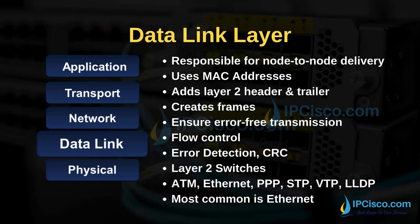The data link layer is the second layer of the TCP/IP model. It is similar to the OSI data link layer. The main responsibility of the data link layer is node-to-node delivery of data. It provides error-free transmission of data. Flow control, error detection, and CRC are used in this layer. Physical addresses — MACs — are also used in this layer.